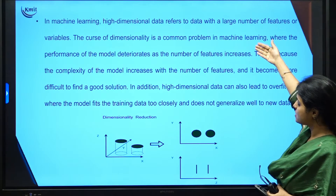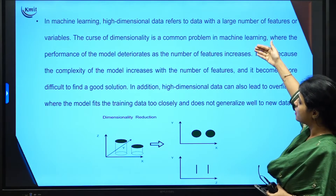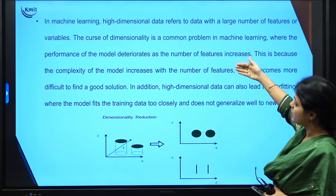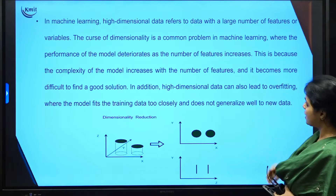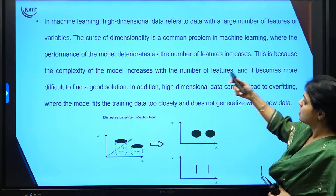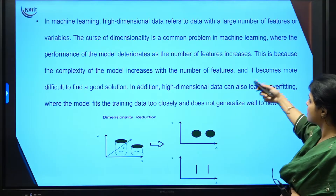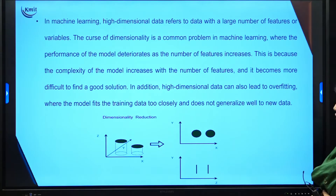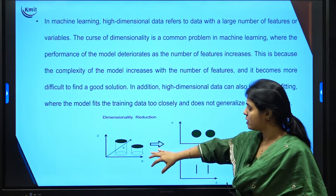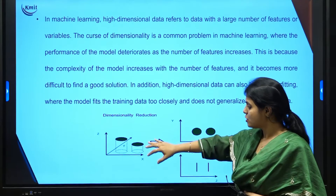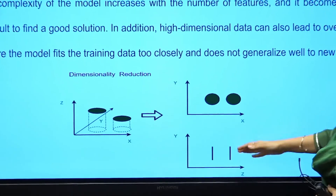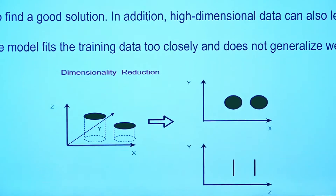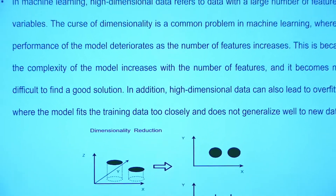As features increase, the model's performance deteriorates — that condition is called the curse of dimensionality. This is because the complexity of the model increases with the number of features, making it more difficult to find a good solution. So we take high-dimensional data and reduce it to lower-dimensional data, such as going from 3D to 2D or 1D.